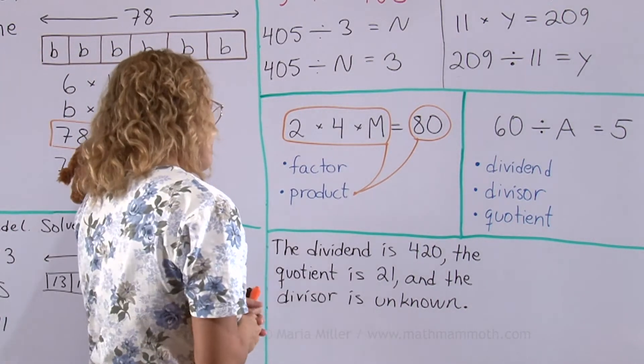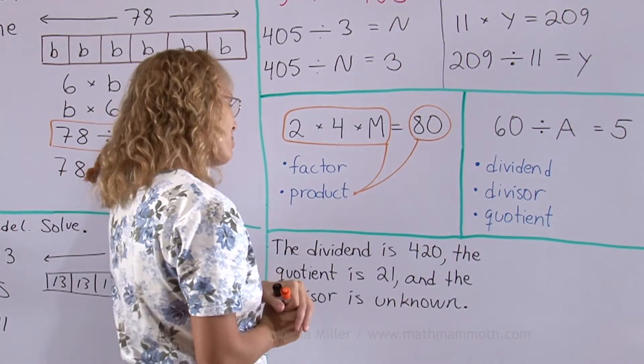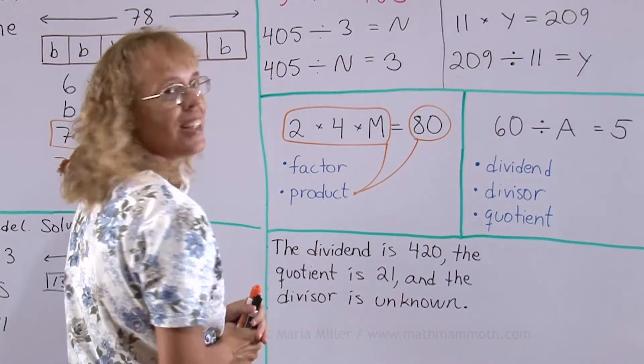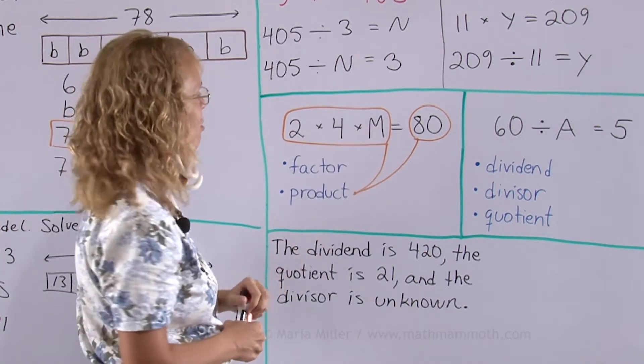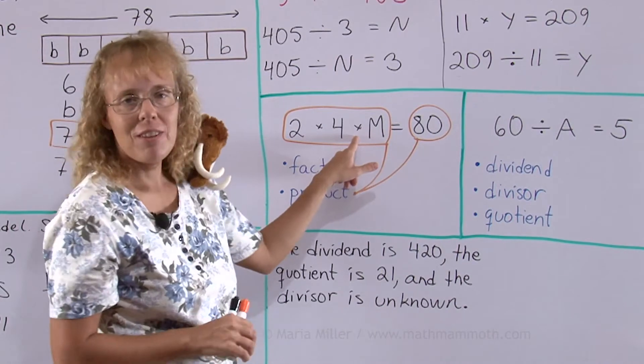Oh this is Matthew. M equals Matthew. He's saying M here symbolizes Matthew's age and this is an equation that if you solve this you will find Matthew's age in months.